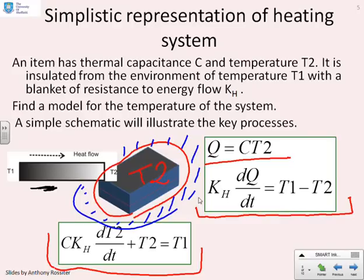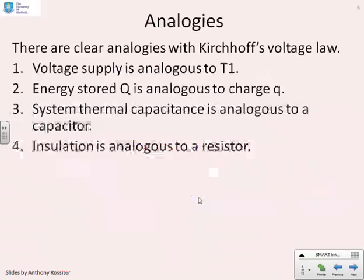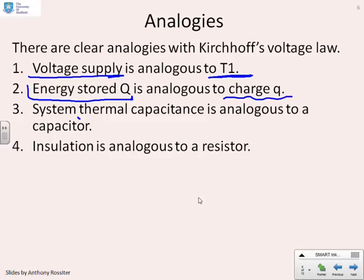What are the analogies? We can very easily build an analogy between the voltage supply for an electrical circuit and the external temperature for this thermal system. The energy stored in the thermal system Q is analogous to the charge in a capacitor. The thermal capacitance is analogous to the electrical capacitance, and the insulation which prevents flow is analogous to a resistor because a resistor prevents current flow.